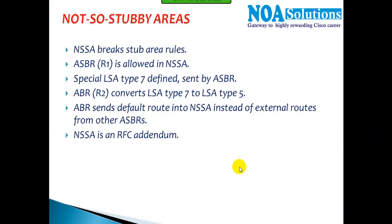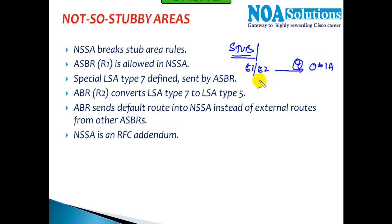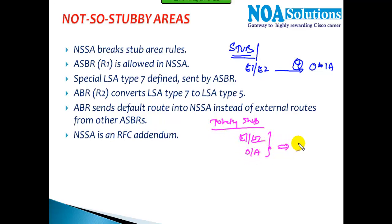In this section we will be discussing NSSA — Not So Stubby Area. This comes after the stub and totally stub concepts we discussed in the previous class. A stub area stops external E1/E2 routes and the border router sends a single default route instead. A totally stub area stops both external routes and inter-area OA routes, replacing them with a single default route.